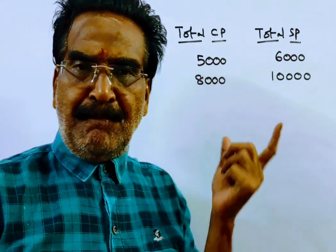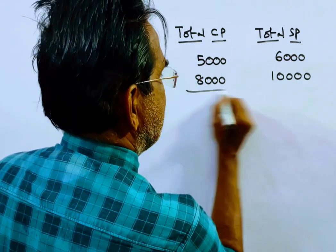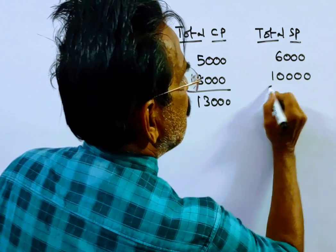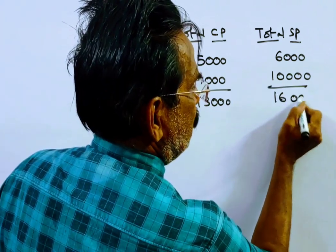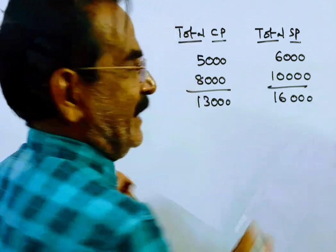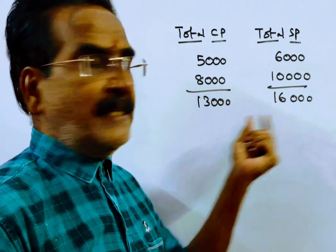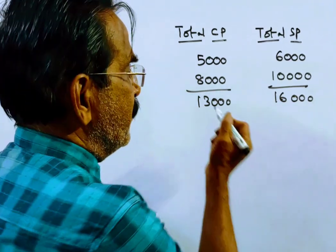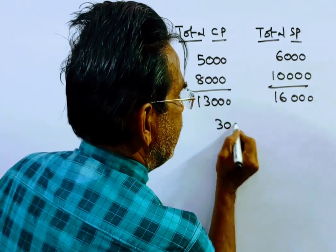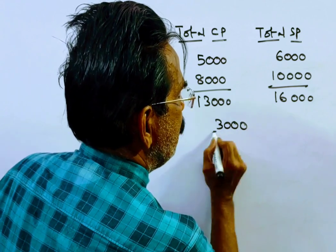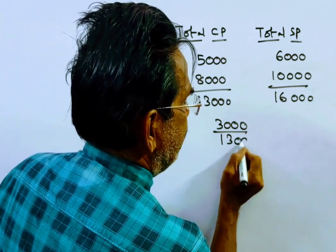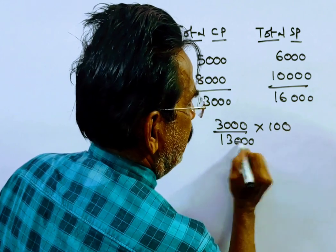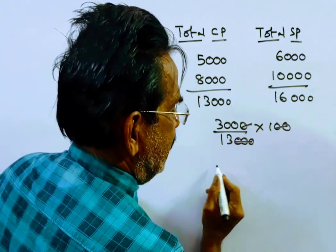His total cost price is 13,000 and his total selling price — that is the total amount he realized — is 16,000. Obviously the profit is 3,000. So profit percent is 3,000 over 13,000 into 100.